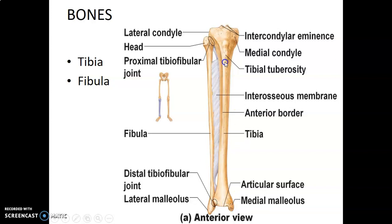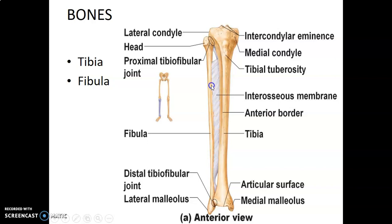The tibia is essentially a triangular bone. It has a medial surface that is usually subcutaneous, a lateral surface, and a posterior surface — so three surfaces: medial, lateral, and posterior. Between the tibia and fibula, we have an interosseous membrane, which is a modification of fascia cruris.